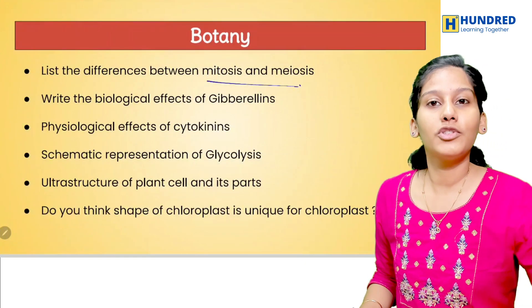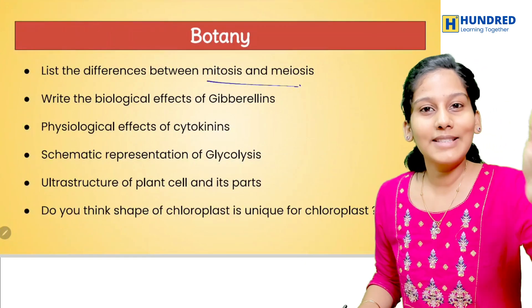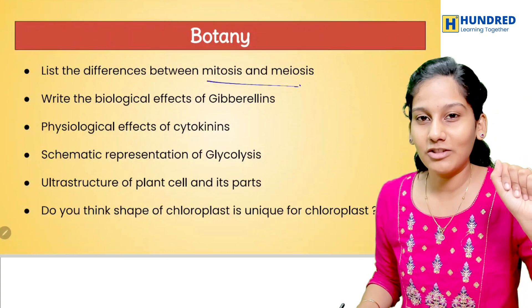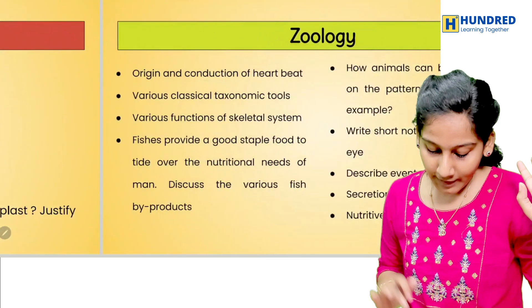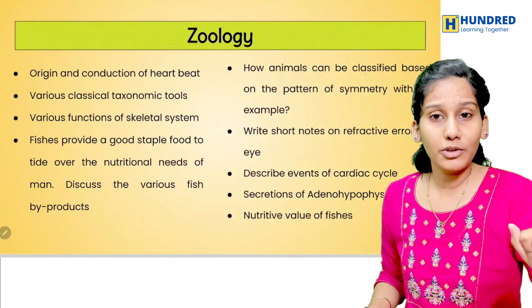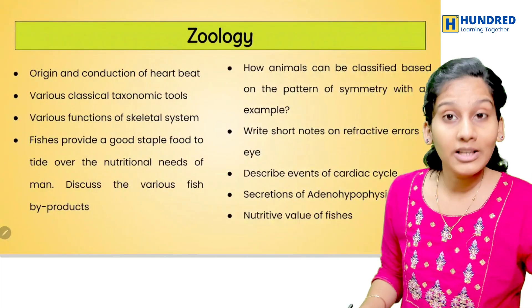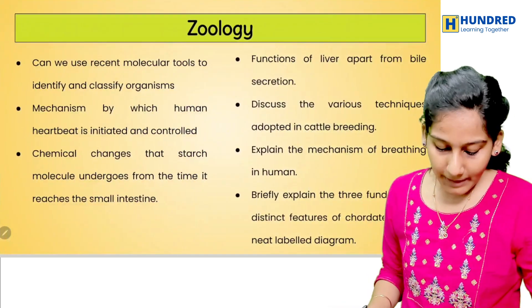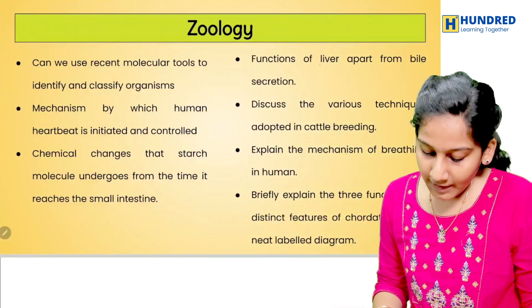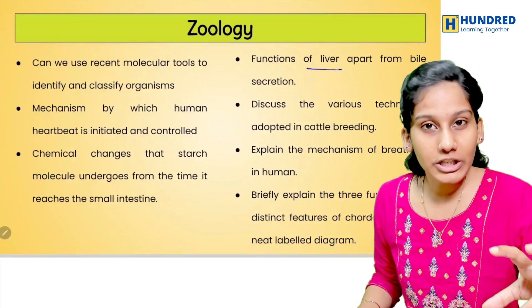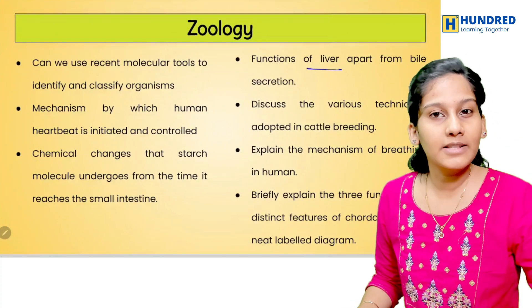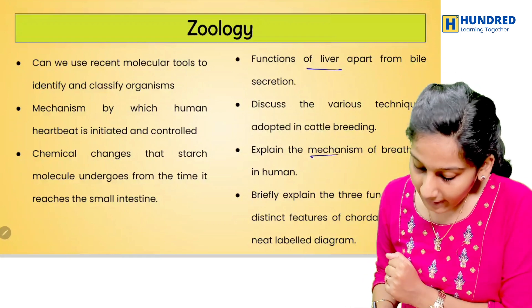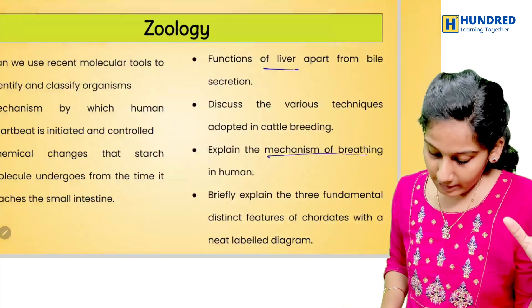Mitosis and meiosis are important. Plant growth hormones — at least auxin, gibberellin, and cytokinin — and their antagonistic effects are key. The cardiac cycle and mainly the functions of the liver are important topics in human physiology. All those chapters' important questions should be covered first. The mechanism of breathing is also a very important question.